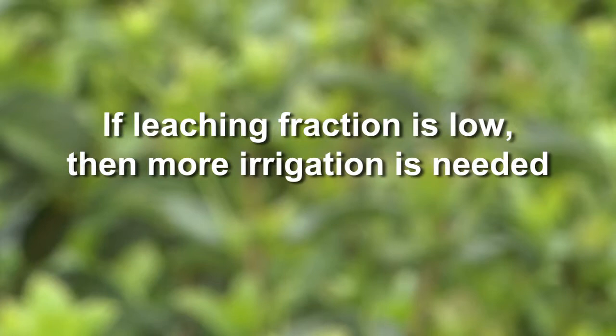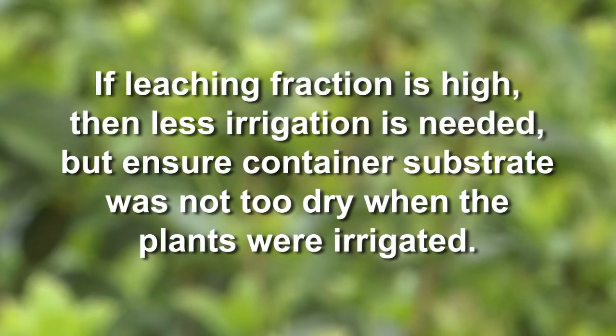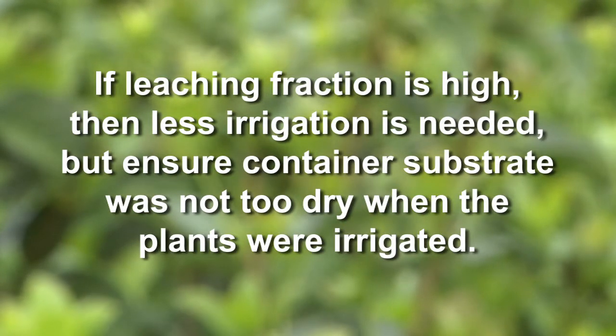If leaching fraction is low, then more irrigation is needed. If leaching fraction is high, then less irrigation is needed — but ensure the container substrate was not too dry when the plants were irrigated.